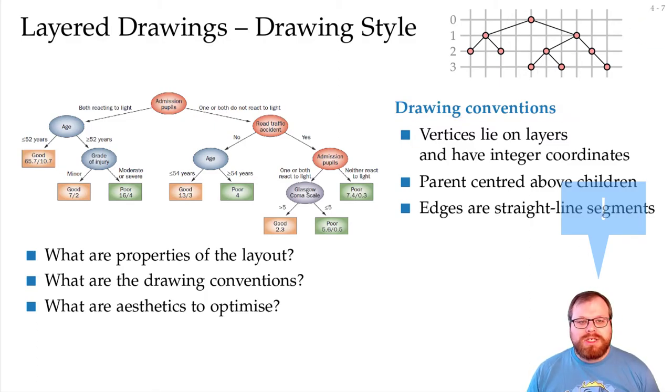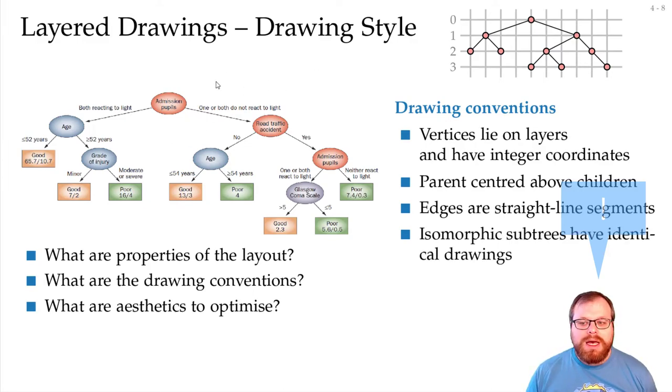We want the edges to be straight line segments. We don't want them to have any bends or curves, just straight line segments. And what we also want is something that we probably didn't come up with, that is, isomorphic subtrees have identical drawings. What does it mean?